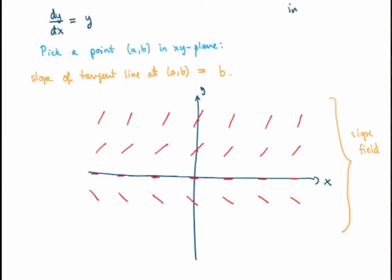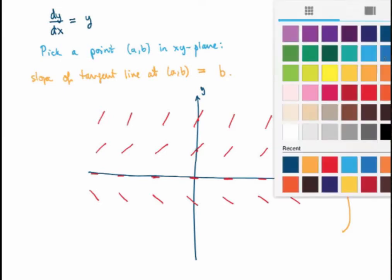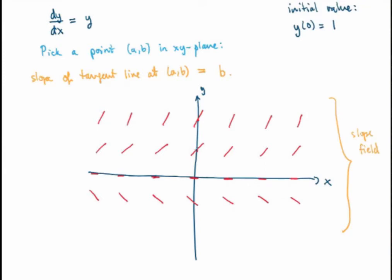If you're given an initial value — say y(0) = 1 — that corresponds to choosing a point in the xy plane that the solution must pass through, which fixes a particular solution. So I require my solution to go through the point x=0, y=1. Given an initial value, you can sketch what the solution should look like just by following the slope field. Of course, you can recognize that this solution is the exponential, but even if we hadn't solved the equation, we could still sketch the graph just from the slope field.